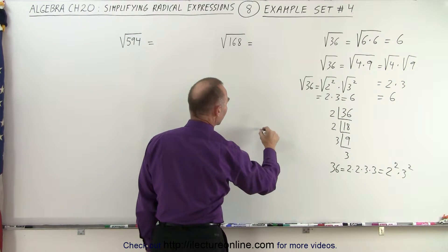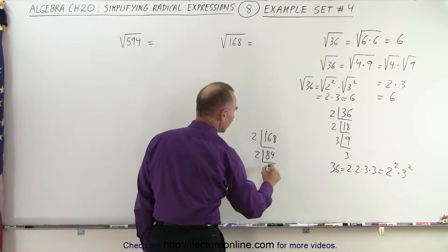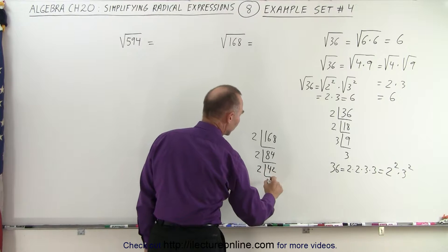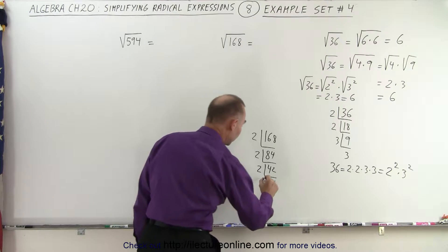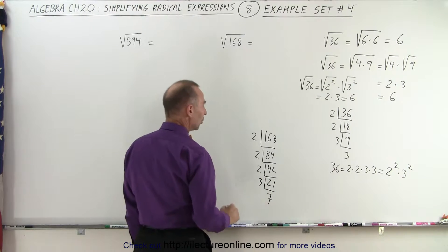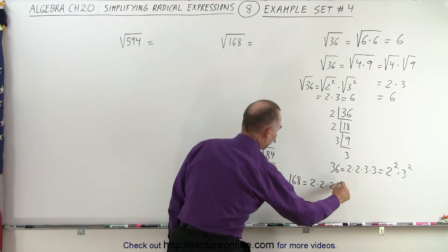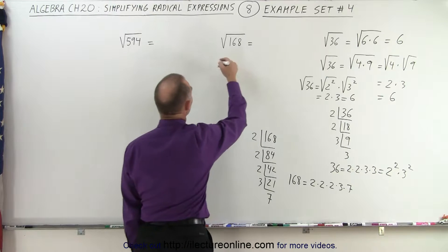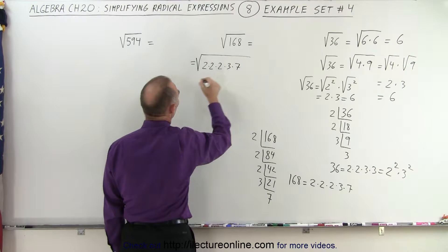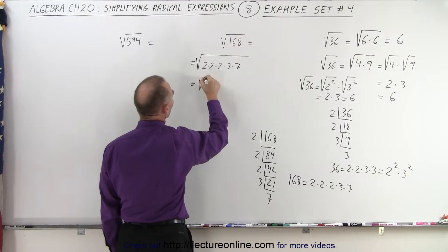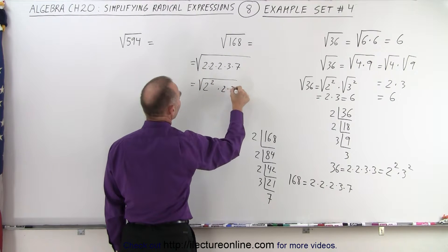168 divided by 2, because it's even, is equal to 84. That result is divisible by 3, giving 7, which means 168 equals 2 times 2 times 2 times 3 times 7. So this can be written as the square root of 2 times 2 times 2 times 3 times 7, or the square root of 2 squared — since 2 times 2 is 2 squared — times 2 times 3 times 7.